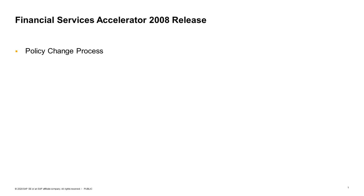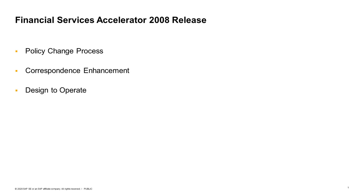What's new in this release? The policy change process enables insurance carriers to provide their customers the possibility to change a policy online. Correspondence enhancement: with the latest enhancements, we are providing integration with SAP Cloud Platform Document Management. Design to Operate: a step-by-step guide to create a copy of an existing product. Value Lists: offer the possibility for business users to configure drop-down or displayed values from back-office.